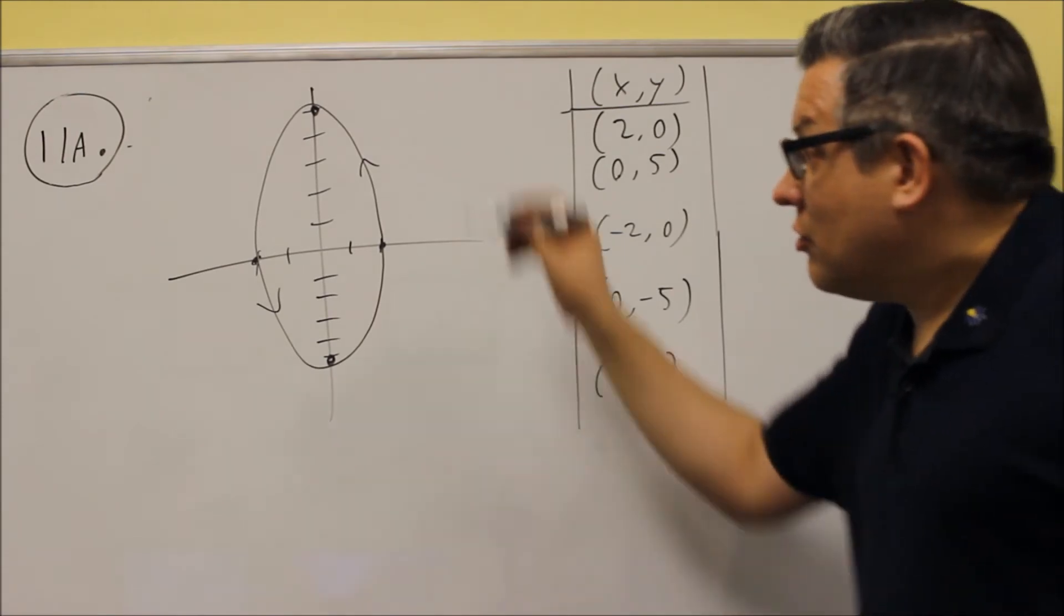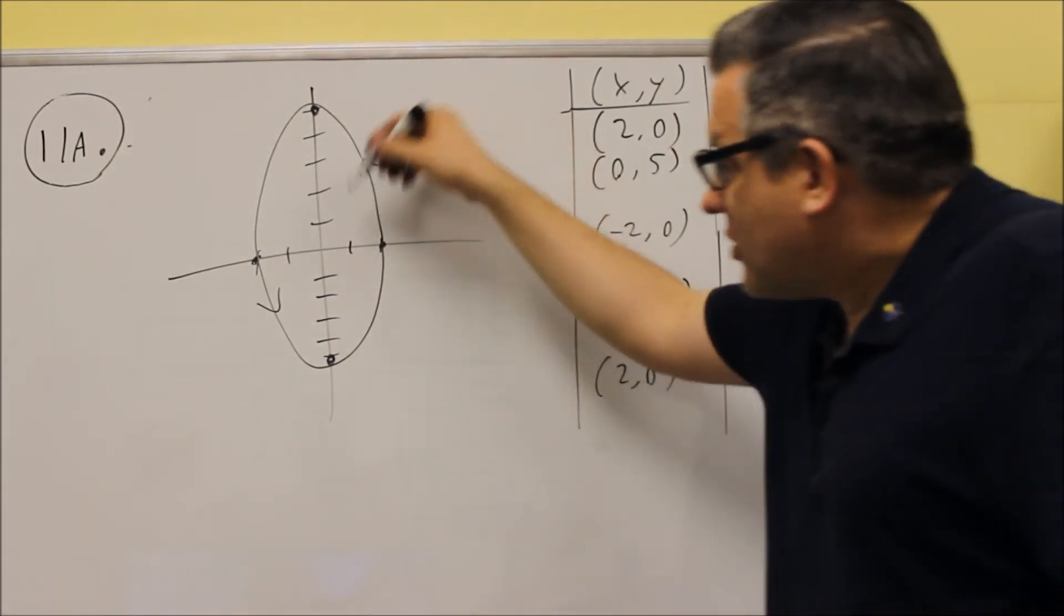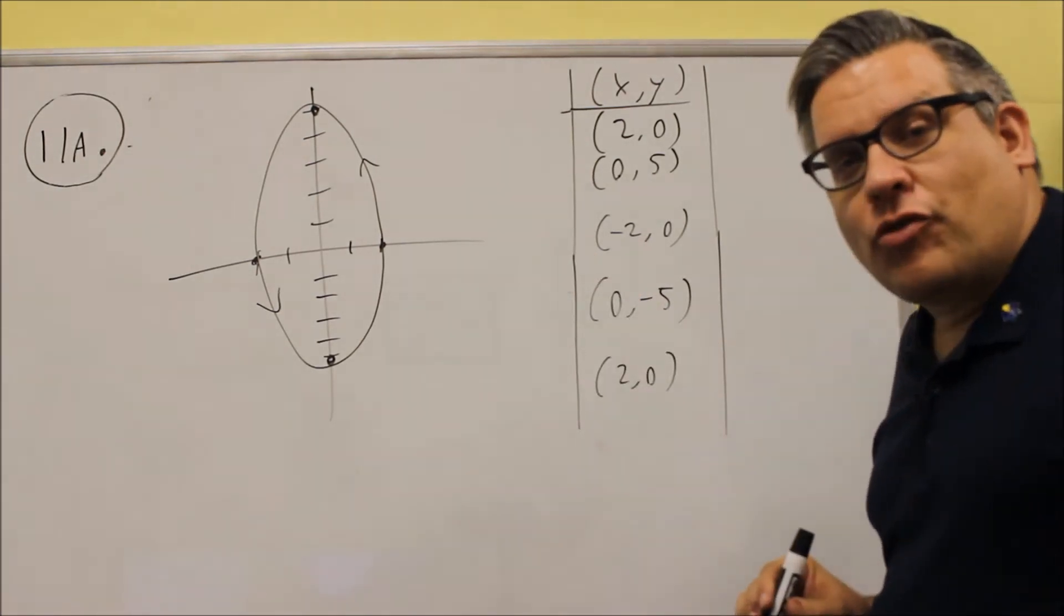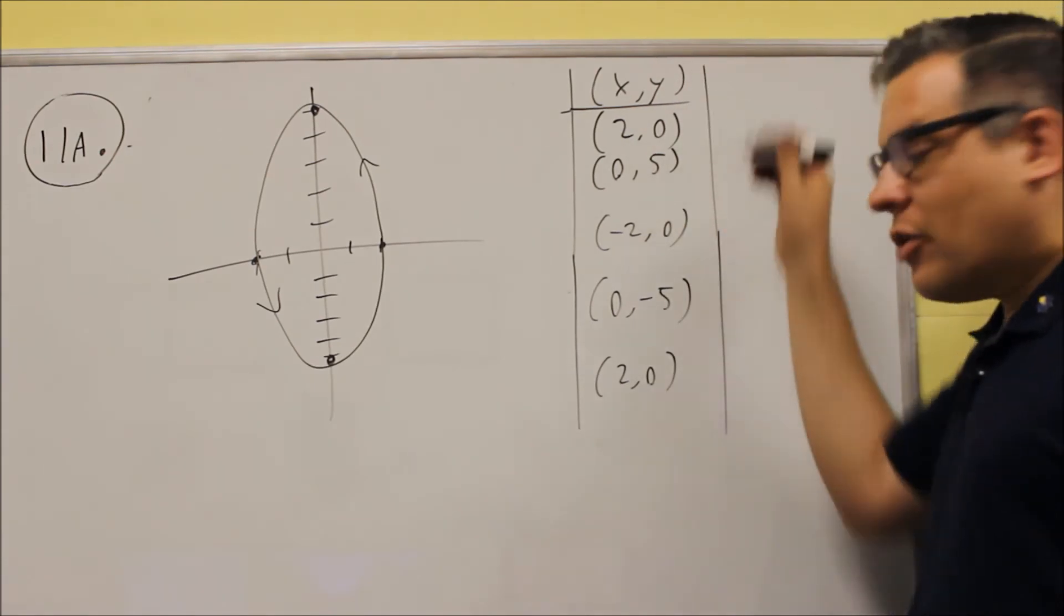So in order to get the graph correct, you have to put the directional arrows on it that makes the graph complete. So you've got to put that on there for full credit. So now that we have the graph complete based on our points that we've plotted, we now need to eliminate the parameter.